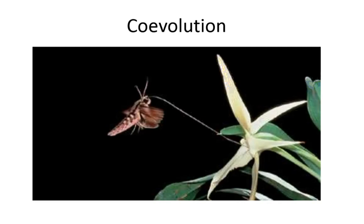Another example: think of the hawk and the mouse. Hawks have very good eyesight; in turn, mice have very good camouflage. As a mouse's camouflage gets better in successive generations, you'd expect the hawk's eyesight to get better too. The cheetah is the fastest animal in the world — and it eats the second fastest animal in the world. These two animals have co-evolved in order to match one another.